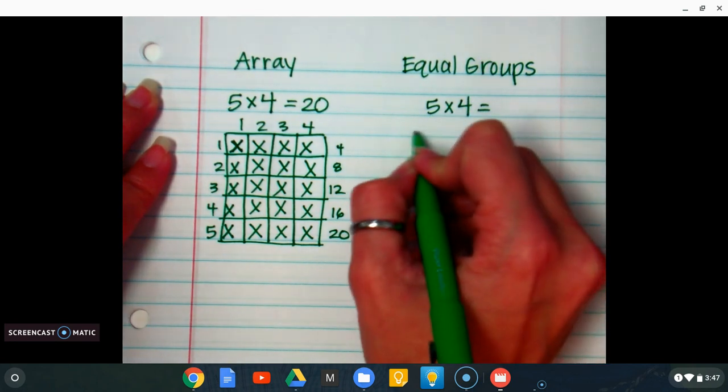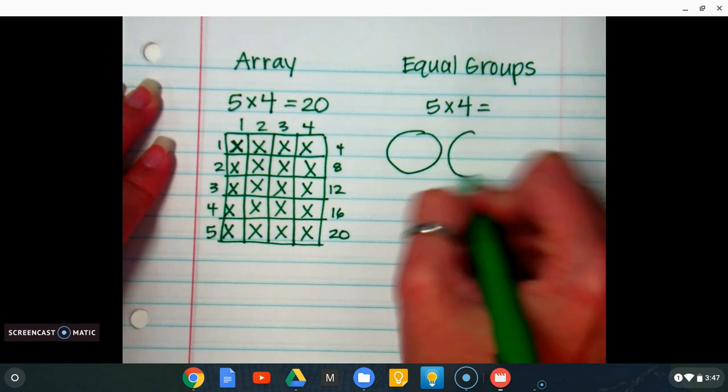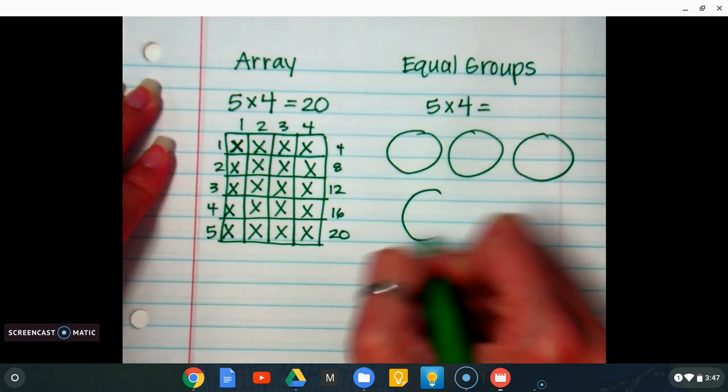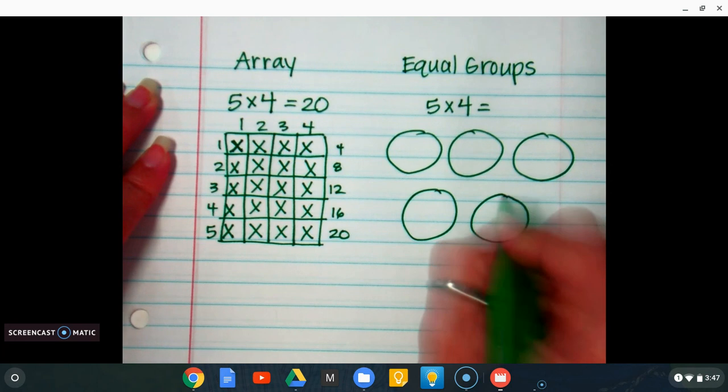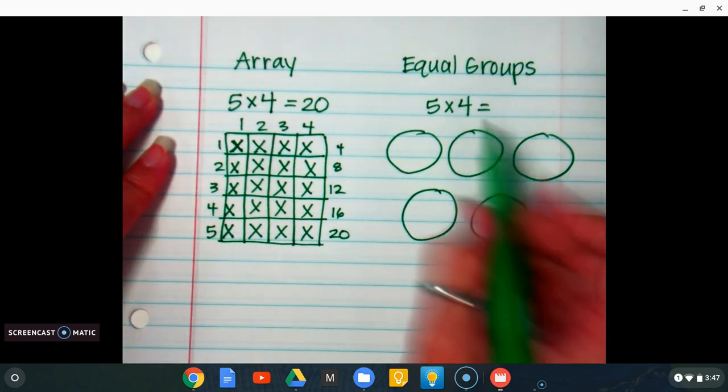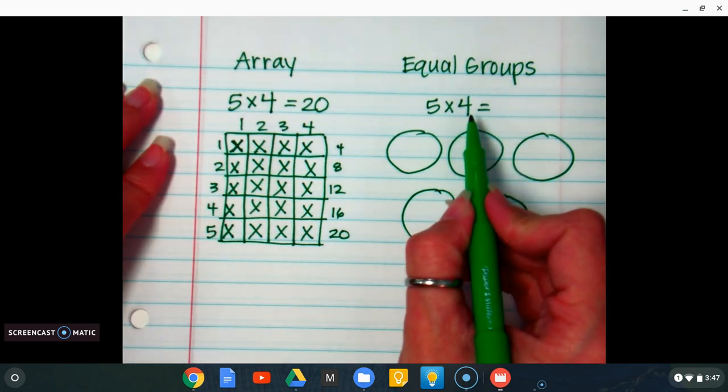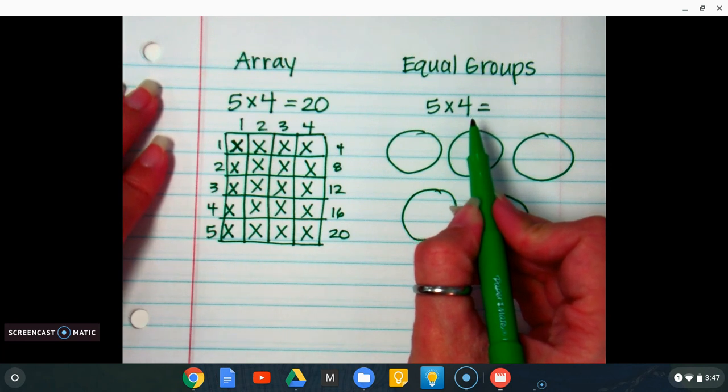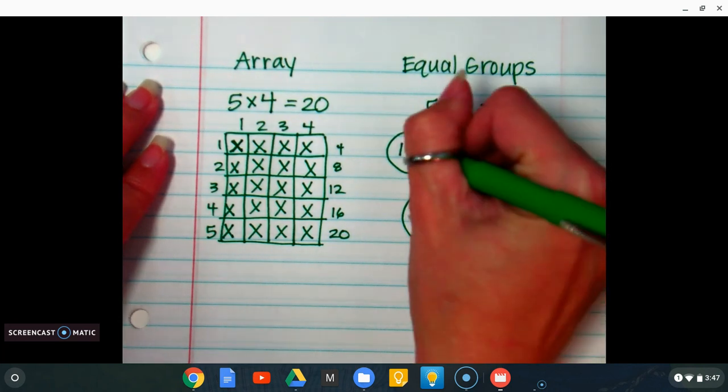The second number tells you how many tallies you're going to have in each circle. So I'm going to have to put 4 tallies in each circle: 1, 2, 3, 4.